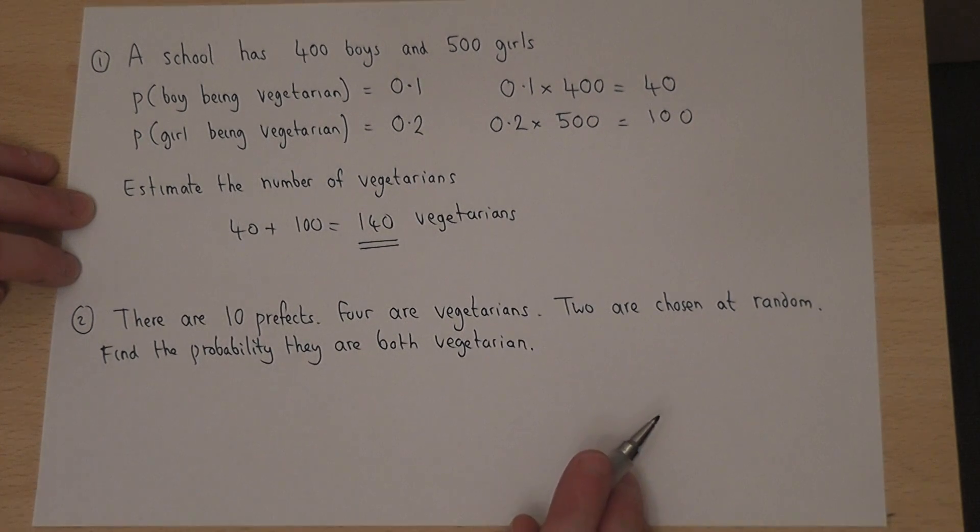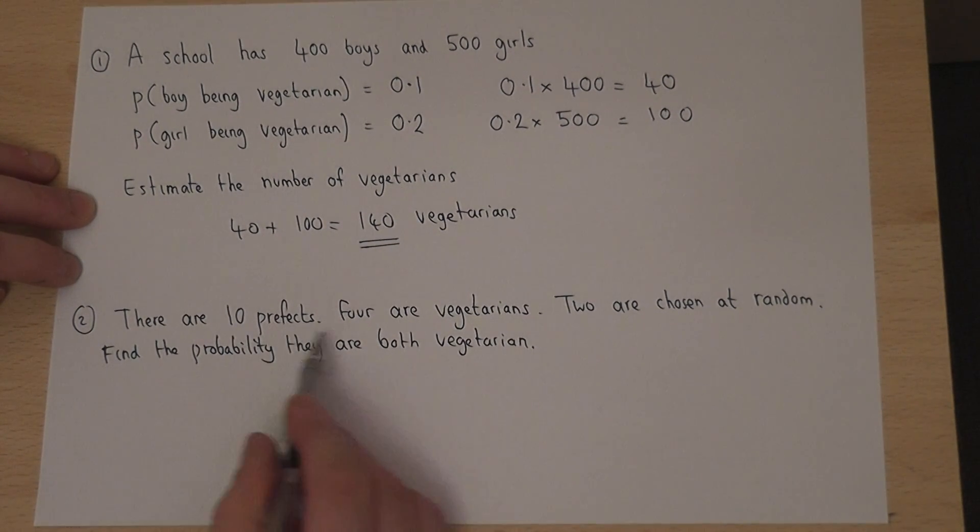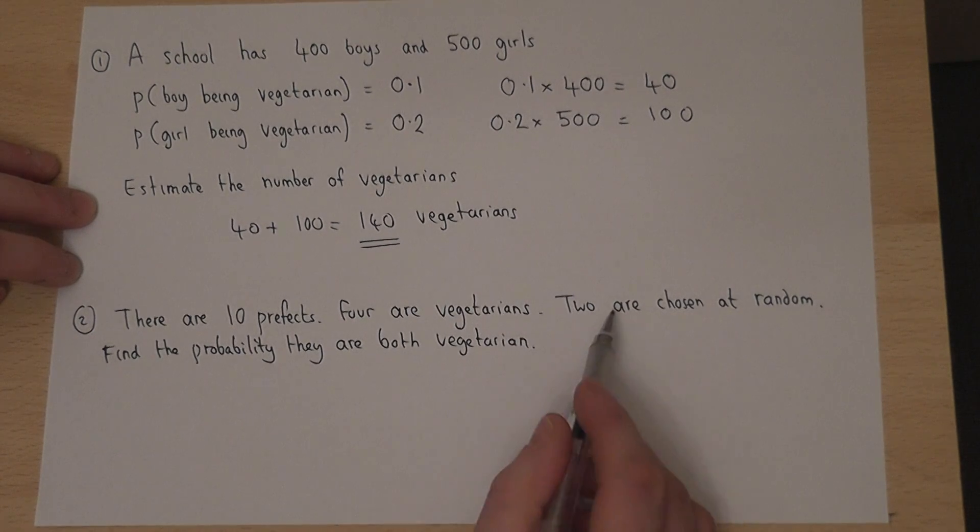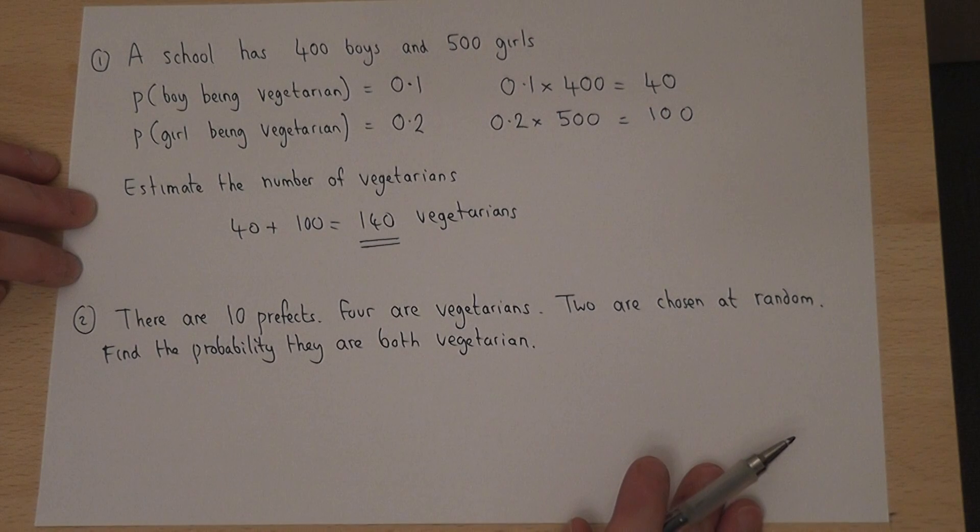In part 2, we're then told there are 10 prefects, four of whom are vegetarians. Now suppose two are chosen at random. What's the chance they are both vegetarian?